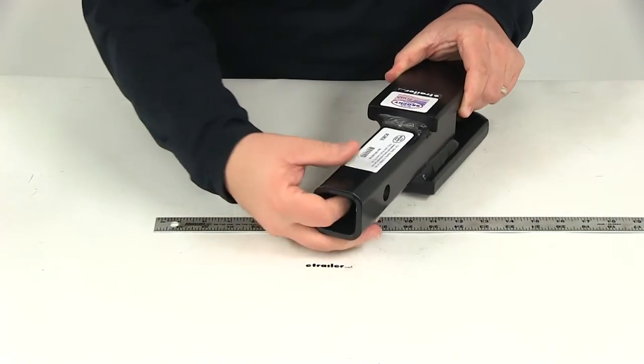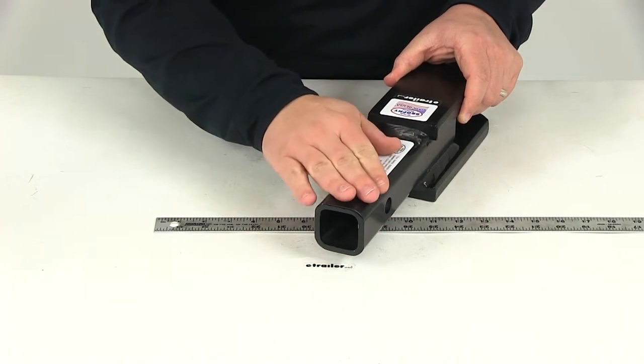You can see here, it's going to feature a hollow shank. This is going to be the portion that slides into the receiver tube of your hitch.